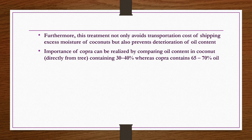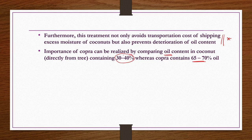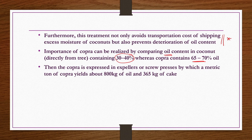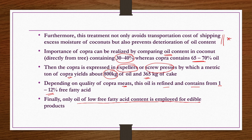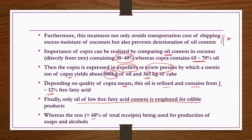Copra contains 65 to 70 percent oil content, compared to only 30 to 40 percent in raw coconut. Copra is expressed in expellers or screw presses; a metric ton of copra yields around 800 kg of oil and 365 kg of cake. This oil is refined and contains 1 to 12 percent free fatty acid, suitable as cooking oil. Only oil of low free fatty acid content is used for edible products; the remaining 60 percent is used for production of soaps and alcohols.